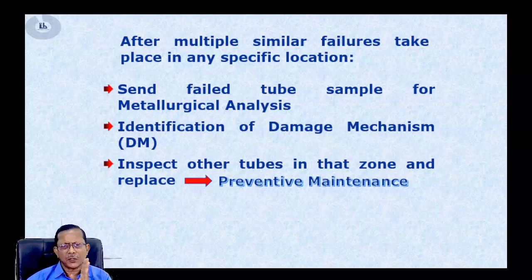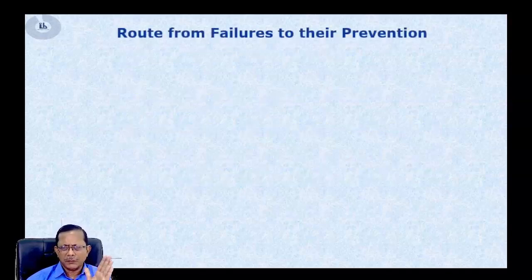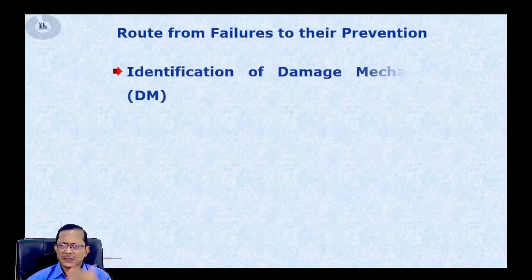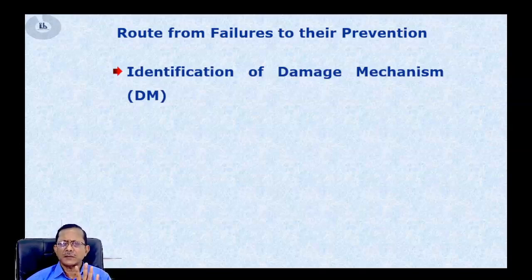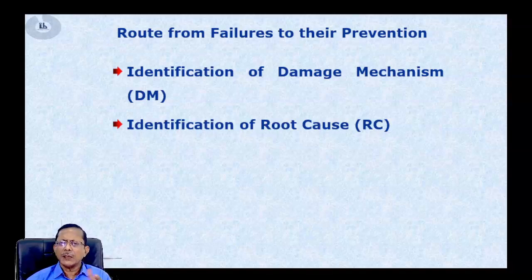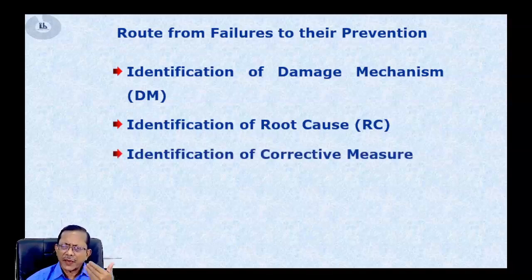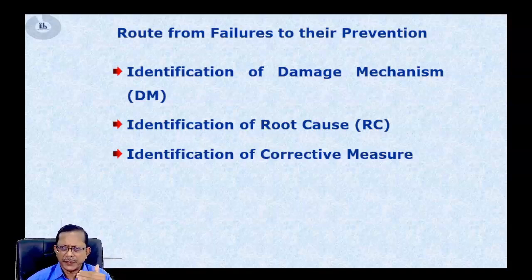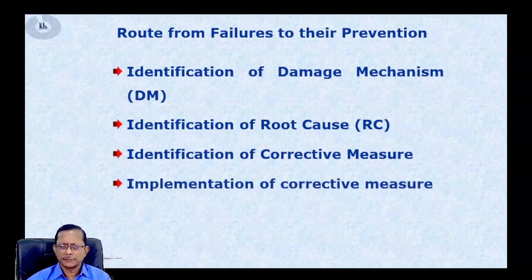What should actually be done — from failure to prevention — is: first, identify the damage mechanism. Once the damage mechanism is defined, find out what is causing it. That is the root cause. Once the root cause is found, identify what corrective actions should be taken to remove it, and then properly implement those corrective actions.